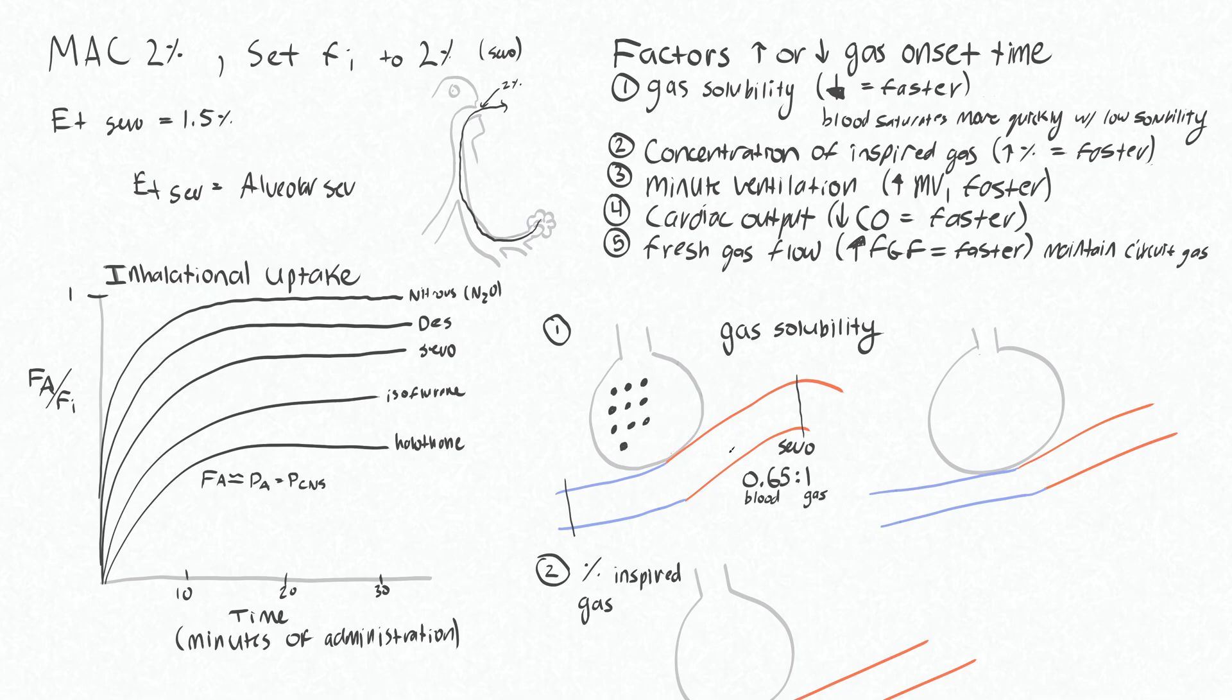These particles are going to equilibrate based on the blood gas partition coefficient. So these will leave or dissolve into the blood, and actually 4 of these will come over and be dissolved in the blood here, leaving 6 in the alveoli. And that satisfies this 0.65 to 1 ratio. So if we have 4 particles in the blood over 6 left over in the alveoli, we get 0.66. So that's basically modeling now what the actual blood gas coefficient of Sevoflurane is.